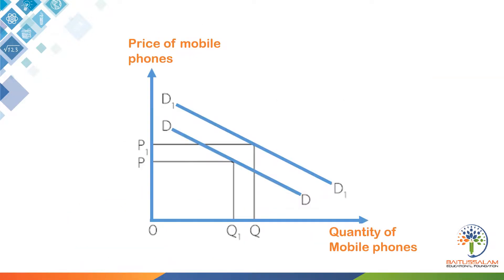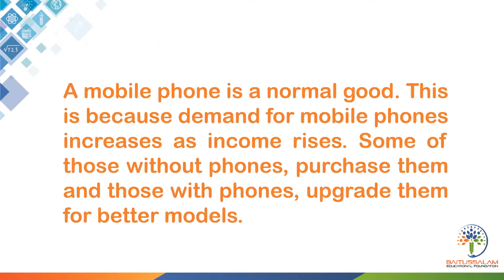Demand for mobile phones increased in China. This would have caused their price to rise and their supply to extend. The graph would shift from D to D1. A mobile phone is a normal good because demand for mobile phones increases as income rises — some of those without phones purchase them, and those with phones upgrade them for better models.